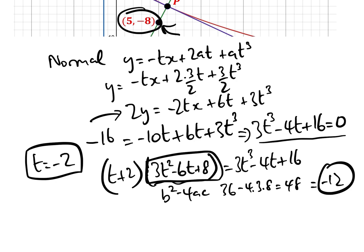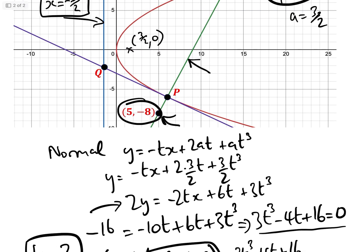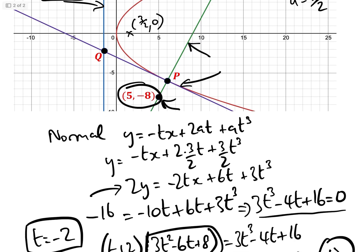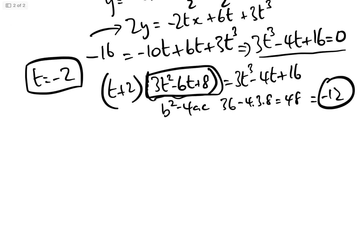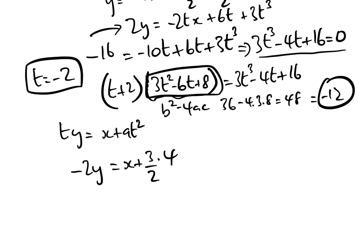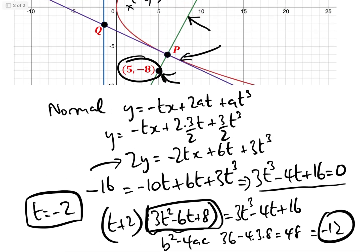Now that we know t = −2, we substitute into the tangent equation ty = x + at². This gives −2y = x + (3/2)(4), so −2y = x + 6. That is the equation of the tangent at point P.